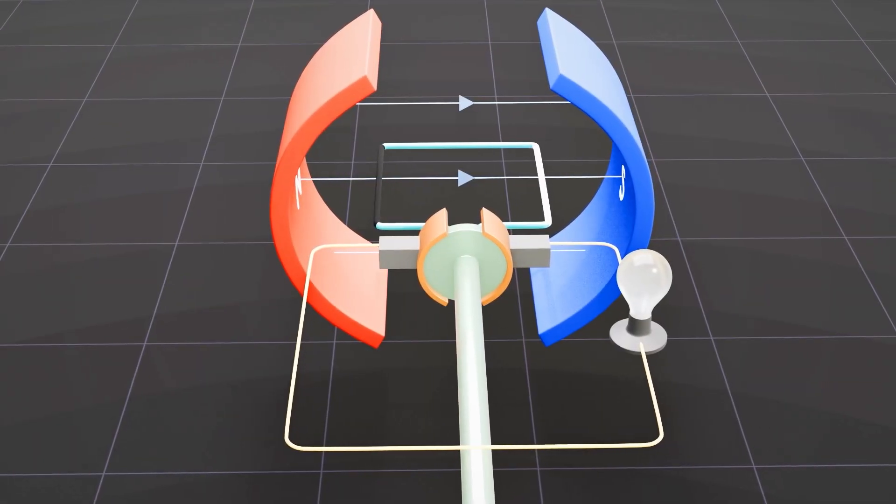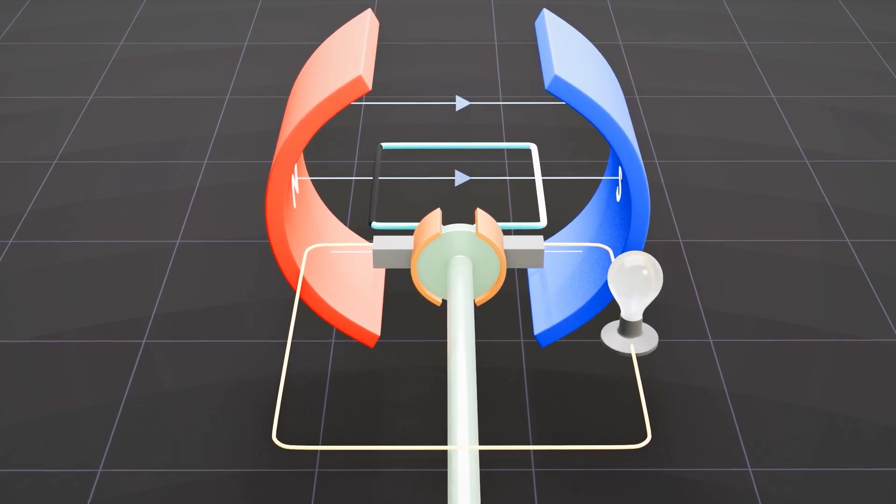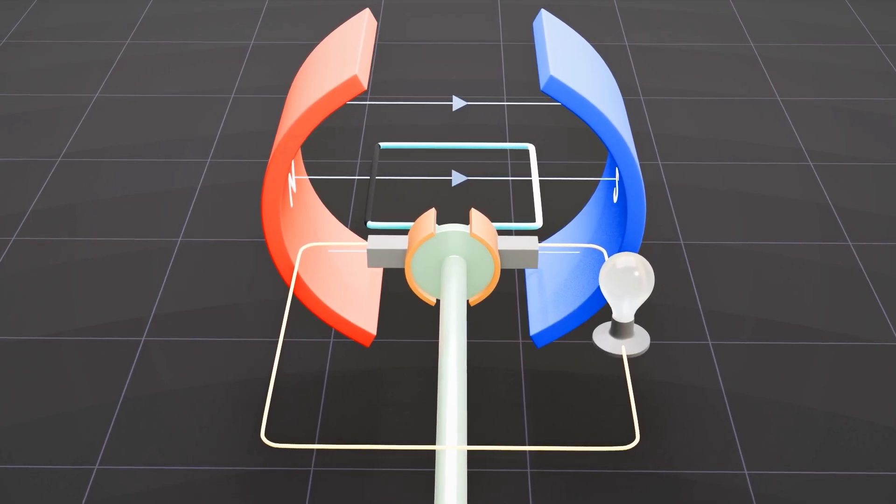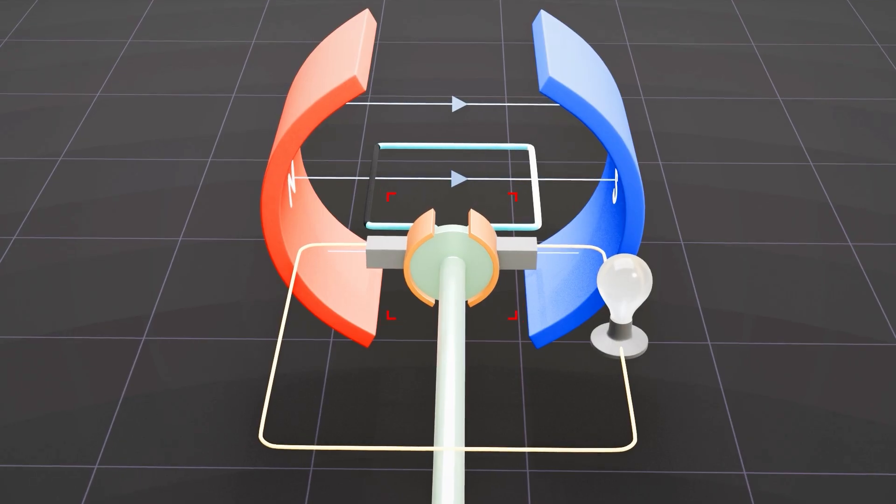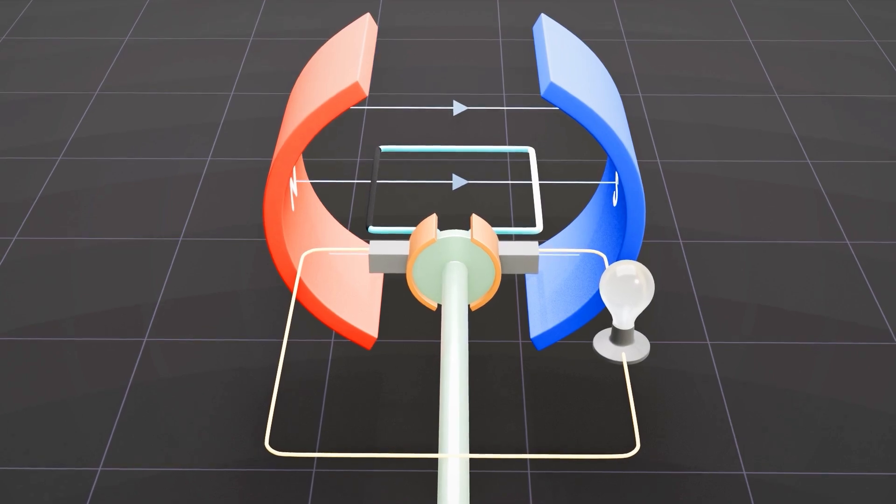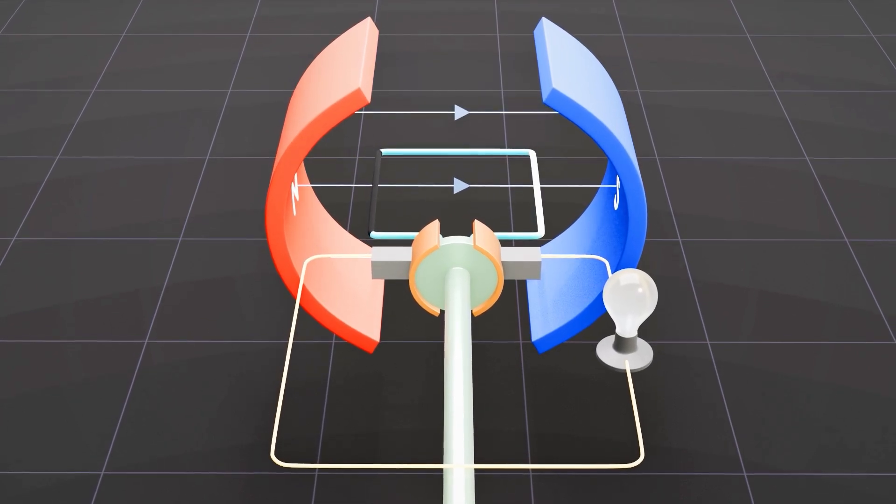To convert an AC generator into a DC generator, you can modify the generator's structure by replacing the slip rings with a commutator. This commutator comprises a split ring and plays a crucial role in altering the direction of the current.